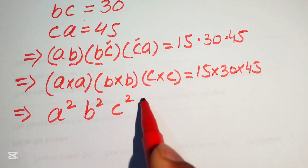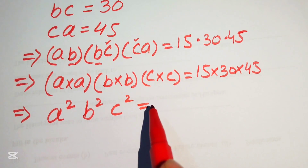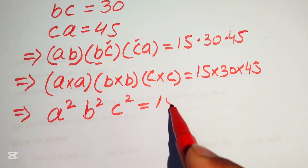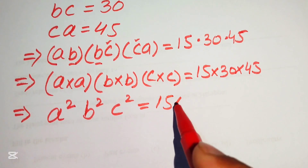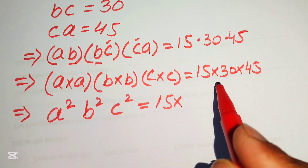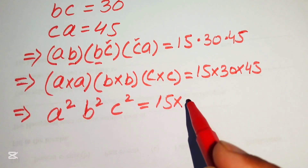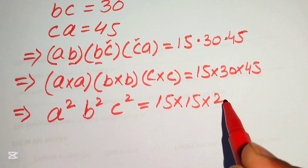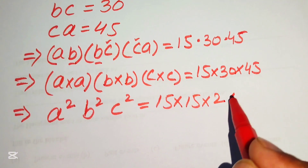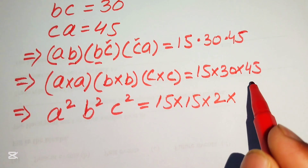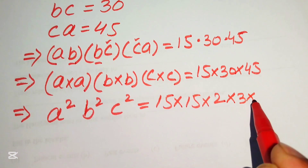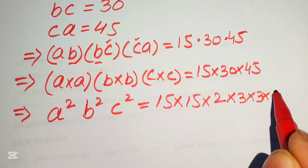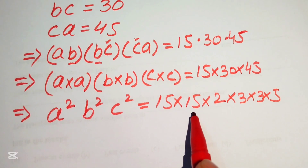We simplify the right hand side by writing 30 as 15×2 and 45 as 3×3×5, so the right hand side becomes 15 × 15×2 × 3×3×5.